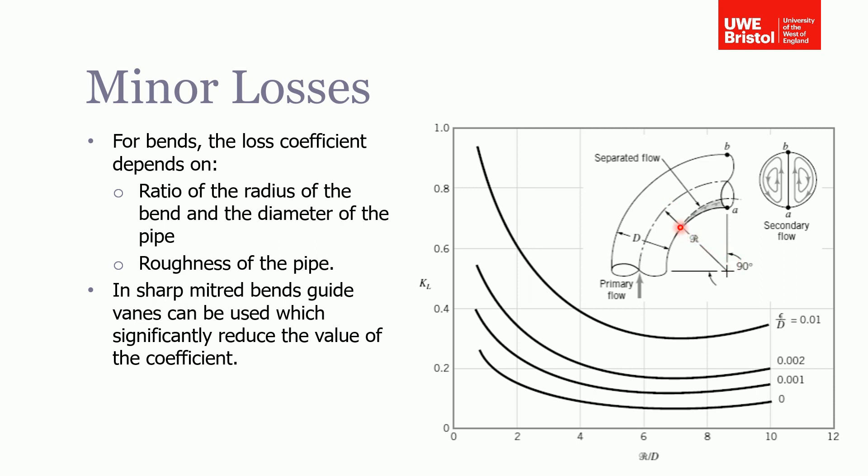Firstly, how tight the bend is—that's defined as the radius of the bend to the diameter of the pipe—and also on the roughness of the pipe. You can see here, for example, if we had a radius to diameter ratio of six and a relative roughness of 0.001...